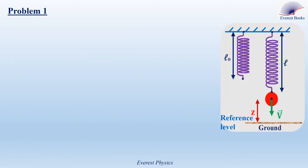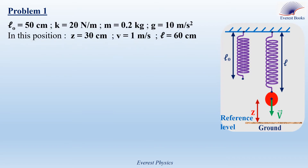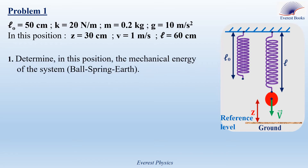Let's go to problem 1. A vertical spring of natural length L0 is attached to the ceiling from its upper end. A ball is attached to the lower end of the spring, and then it is released from rest. The natural length of the spring is 50 cm. The force constant is 20 N per meter. The mass of the ball is 0.2 kg, and the gravitational acceleration is 10 m per second squared. Consider the figure, which shows the ball in a certain position. We take the ground as a reference level for gravitational potential energy. Question number 1: determine, in this position, the mechanical energy of the system ball-spring-earth.